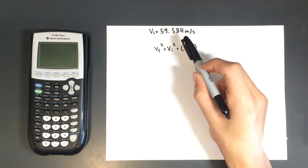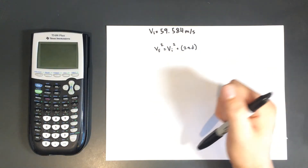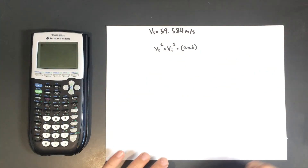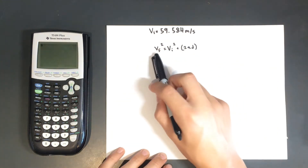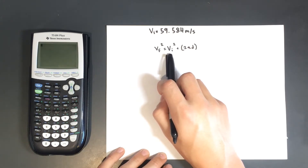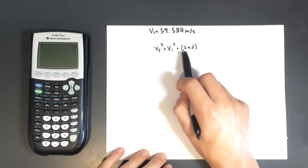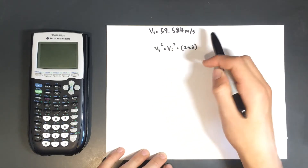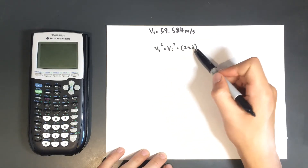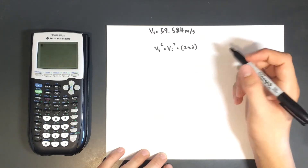Now that we have solved for the initial velocity, we can use a new equation for the final step. The new equation is: final velocity squared equals initial velocity squared plus 2 times the acceleration due to gravity times displacement, which in our case is height.